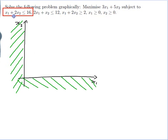Let's start with this inequality: x1 plus 2x2 is less than or equal to 16. If it was equal to 16 I would be drawing a line, so let me pretend it is equal to 16 and figure out what that line is. All I need to draw a line is two points, and the x1 and x2 intercepts are convenient. If x1 is 0 that gives me 2x2 equals 16, so x2 is 8.